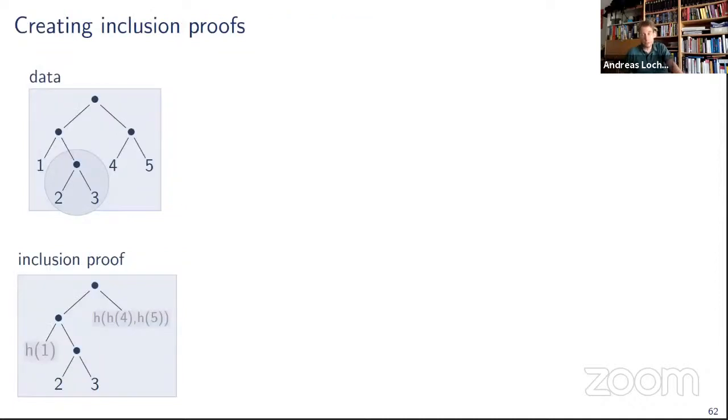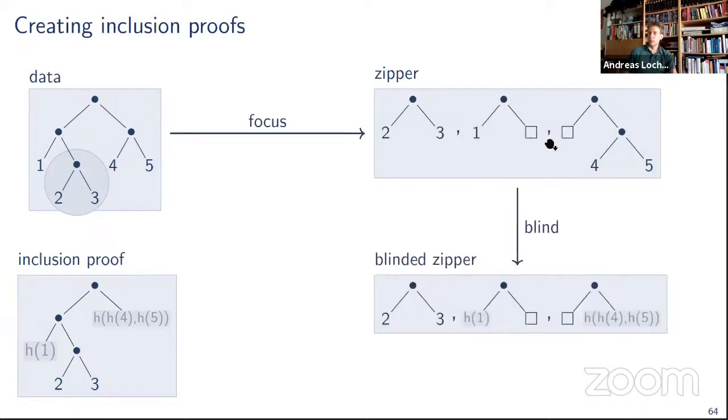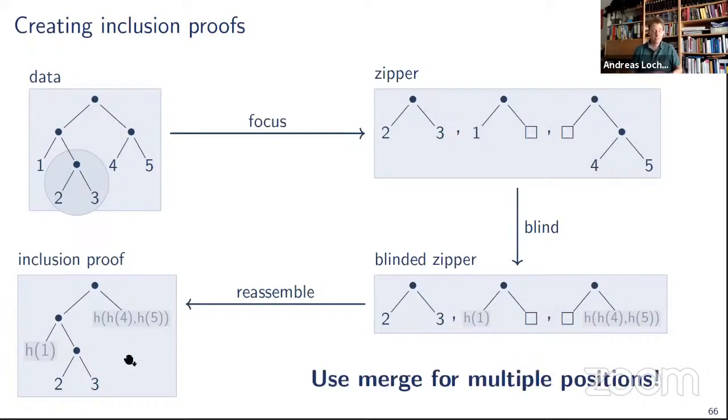I haven't talked much about how to actually create inclusion proofs. But there's actually a nice theory about that as well, details are in the paper. Very simple example, if we have data and want to focus on this subtree of two and three, to get this inclusion proof down at the bottom. What you can do is you can construct a zipper that focuses on the position that you want to prove inclusion of. That decomposes everything with those one-hole contexts that summarize the context of the tree. It's fairly straightforward to blind those and replace the zipper context with hide everything except the one-hole context. And then reassemble everything and you get back to this tree here at the bottom. That gives you an inclusion proof for one position. If you need several positions in one inclusion proof, you can first construct for each position one and then use the merge operation to merge them together. And that's just one example where the power of merge shows up.